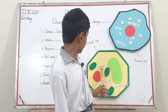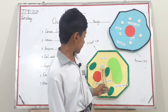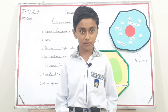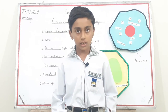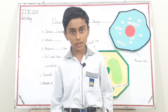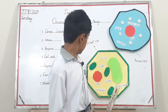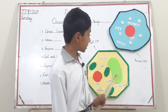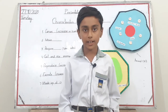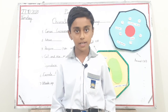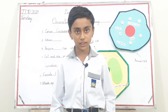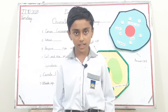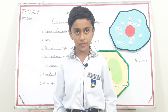Cytoplasm — in plant cell there is cytoplasm. Cytoplasm is a jelly-like material that fills the cell. Chloroplast is present only in plant cell and absent in animal cell. Chloroplast contains a green pigment called chlorophyll, which absorbs sunlight.